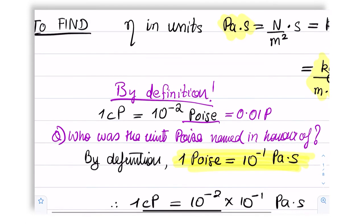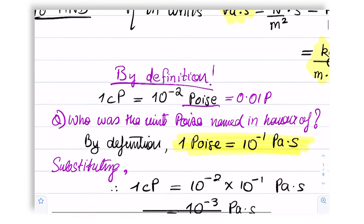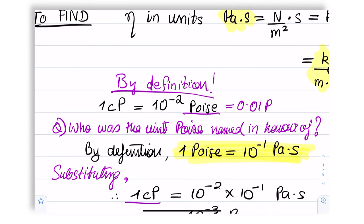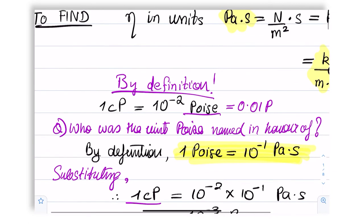So now our job becomes one of substitution, where we can now write one centipoise is equal to 10 to the power minus two poise, but poise itself is 0.1 Pascal second, 10 to the power minus one Pascal second.